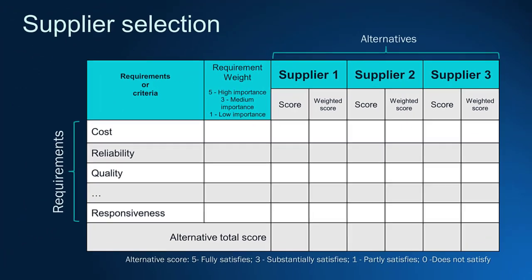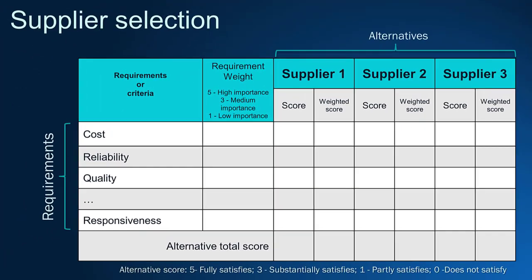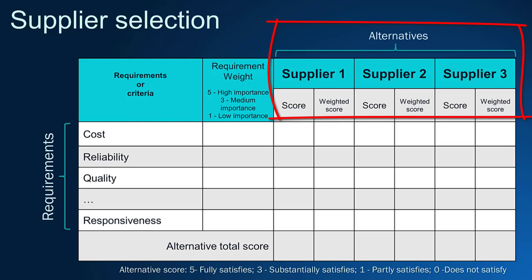This example shows how to approach a supplier selection. The suppliers are placed in the columns and the company business requirements in the rows. By providing rating scores for each supplier, you find out the best supplier to provide the resources required.